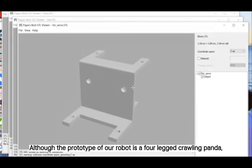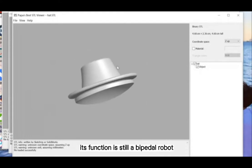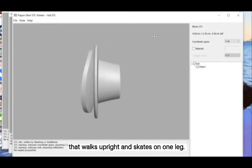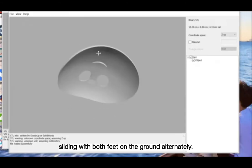Although the prototype of our robot is a four-legged crawling panda, its function is still a bipedal robot that works upright and skates on one leg. We let it imitate the real skater sliding with both feet on the ground alternately.